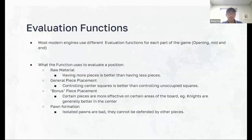Bonus piece placements are a niche point where certain pieces like being on certain parts of the board — bishops and queens enjoy long diagonals and straights, while knights generally prefer central squares. Then we have pawn formation: you want your pawns to support each other and not be isolated.